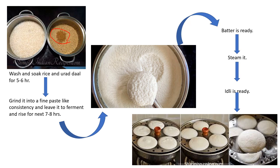Leave the batter to ferment and rise for the next seven to eight hours. A good practice is to prepare the batter at night around 10 to 11 PM, and by 7 or 8 AM the batter is properly fermented. Once you have the fermented batter, pour it into a steamer and steam for around six to eight minutes — your idli is ready to serve with chutney, sambar, or pickle.